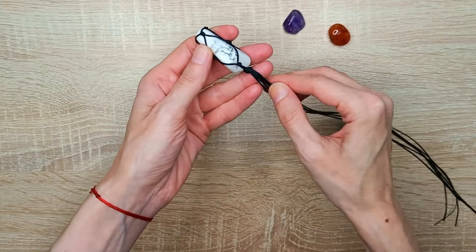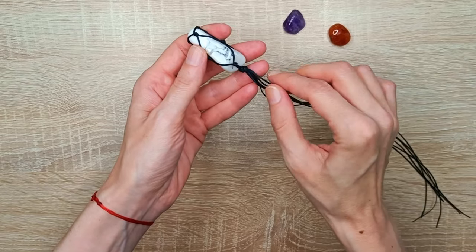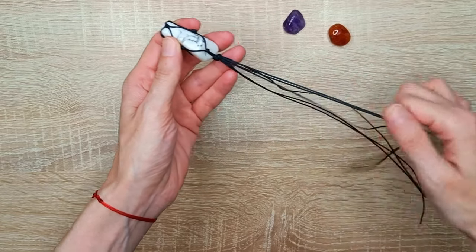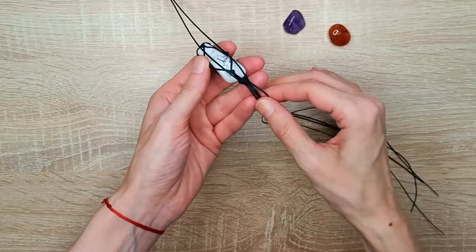Time to add our amethyst. We will divide our six strings in pairs of two and based on our stone, we will decide where to place our knots.